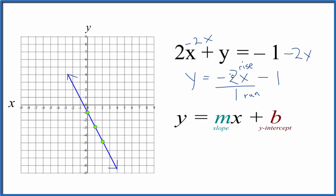Our slope is negative 2. You could call it negative 2 over 1. Our y-intercept is negative 1. If you used a table of values to graph 2x plus y equals negative 1, you'd get the same line.